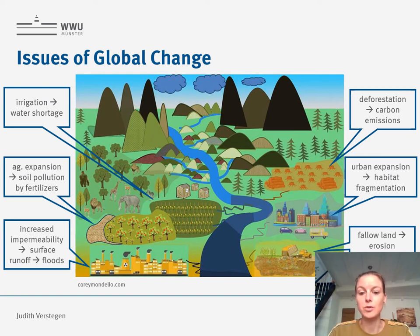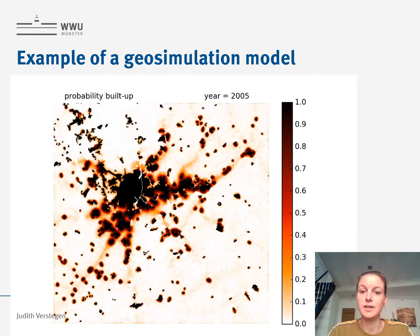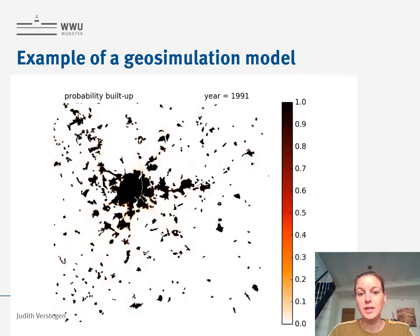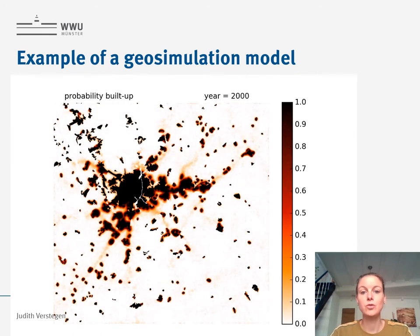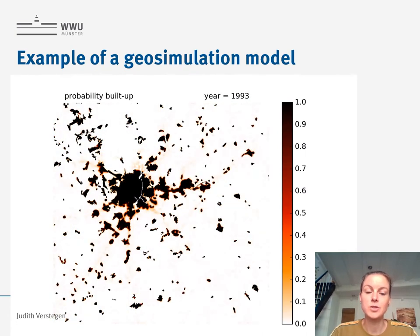Let's look at an example of a geosimulation model — a model of urban expansion. Here you see the city of Madrid and how it was in 1990. We have then implemented a model of urban expansion to project how Madrid will grow over time.